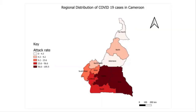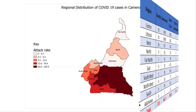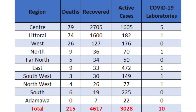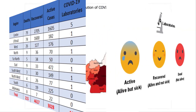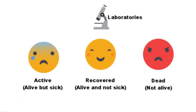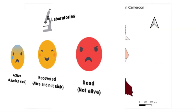Our current map has the attack rate variable displayed. Using SYNACJIT, we will add deaths, recovered cases, active cases, and number of COVID-19 testing laboratories by region. The following images could do us some good in representing these variables. Let's see how.